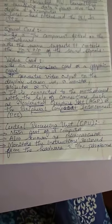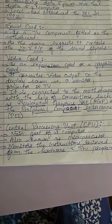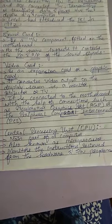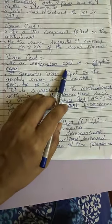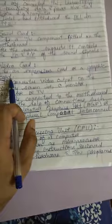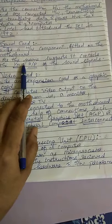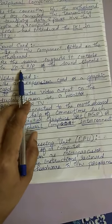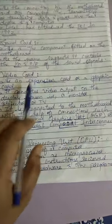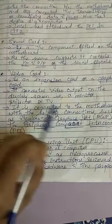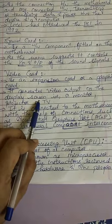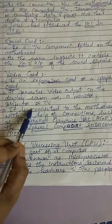Next comes the video card. A video card is also called as an expansion card or a graphic card. It controls the input and output of the sound signals, whereas the video card generates video output on the display screen — that is a monitor, a projector, or a TV.